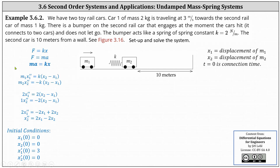Beginning with mass one, we have m1 times x1 double prime equals the spring constant k times the spring compression. As mass one connects with mass two, the spring is compressed, which gives us a force to the right, meaning a positive force. The force of the spring equals k times the spring compression, where the spring compression equals x2 minus x1. This makes sense because if mass two was displaced four units and mass one was displaced three units, the spring would be compressed four minus three, or one unit.